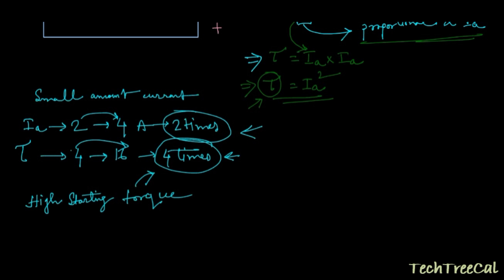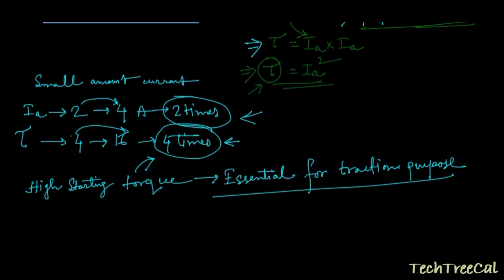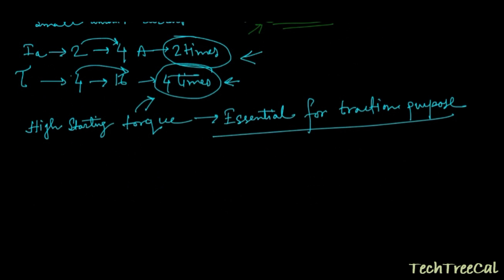Which is very essential for traction purpose. So if I summarize the entire thing: torque is actually φ into Ia. Now your φ or the flux is proportional to your armature current as the armature current is passing through the series coil.